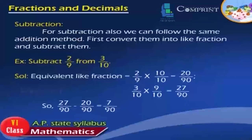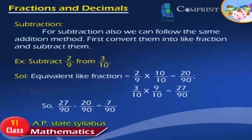Subtraction of Fractions. For subtraction, we follow the same method as addition. First, convert them into like fractions and then subtract them. Example: subtract 2 by 9 from 3 by 10. Solution: the equivalent like fractions are 2 by 9 multiplied by 10 by 10, which equals 20 by 90, and 3 by 10 multiplied by 9 by 9, which equals 27 by 90. So, 27 by 90 minus 20 by 90 is equal to 7 by 90.